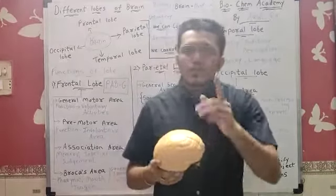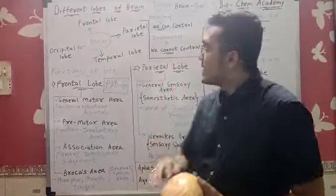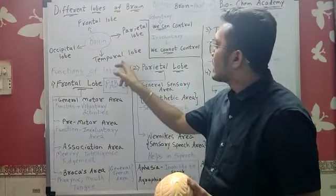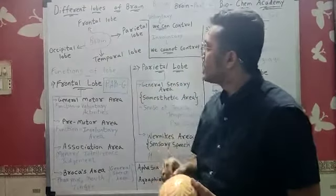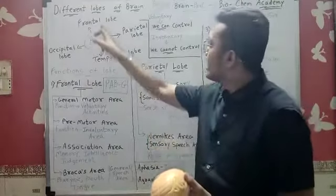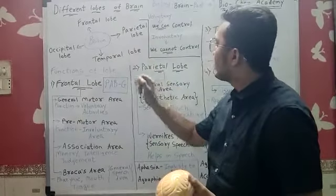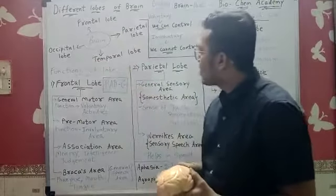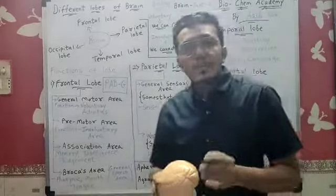Okay, so different lobes of brain. There are four lobes in brain: frontal lobe, parietal lobe, temporal lobe, and occipital lobe. Again, there are four lobes in brain: frontal lobe, parietal lobe, temporal lobe, and occipital lobe. Where are these lobes present in the brain? My position, so this is the brain.